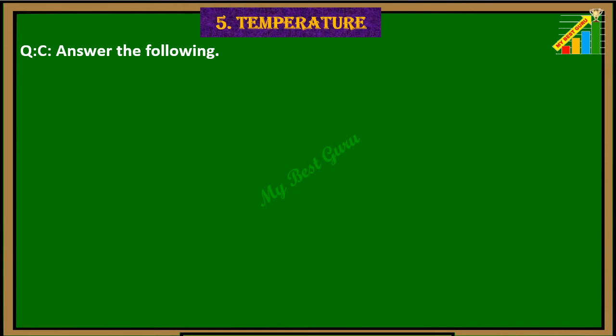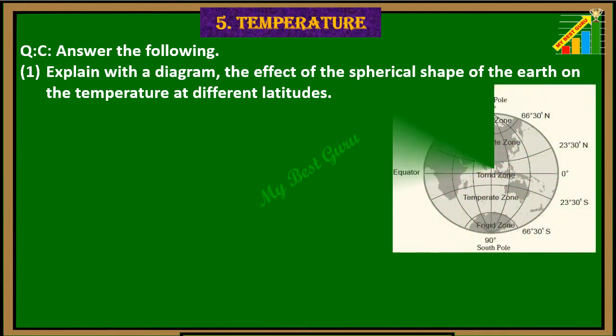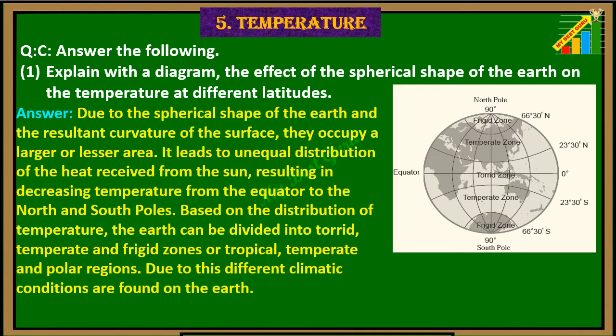Question C. Answer the following. 1. Explain with a diagram the effect of the spherical shape of the earth on the temperature at different latitudes. The diagram is given here. Answer: Due to the spherical shape of the earth and the resultant curvature of the surface, they occupy a larger or lesser area. It leads to unequal distribution of the heat received from the sun, resulting in decreasing temperature from the equator to the north and south poles. Based on the distribution of temperature, the earth can be divided into torrid, temperate and frigid zones, or tropical, temperate and polar regions. Due to these, different climatic conditions are found on the earth.